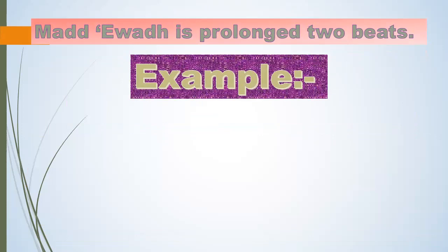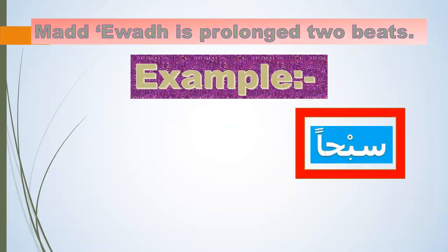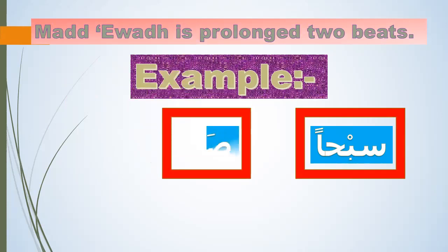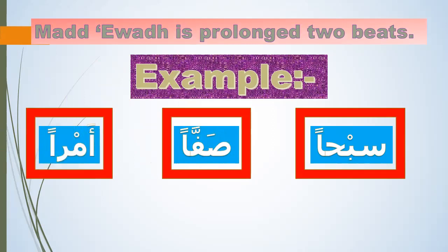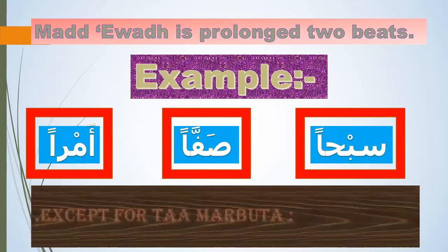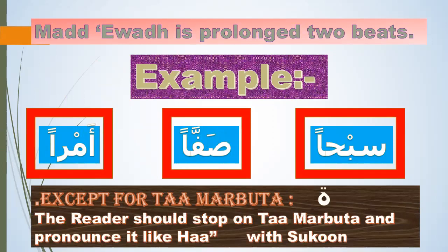Examples — please repeat after me. 'Sabahan' — it's a tanwin with fatha at the end of the word. When you stop, you say 'Sabaha.' Except for taa marbuta — the reader should stop on taa marbuta and pronounce it like haa with sukoon. For example, 'Jariyatan' — when you stop, make it 'Jariyah.' Anytime the last letter is a taa marbuta, when you stop, make it 'haa.'